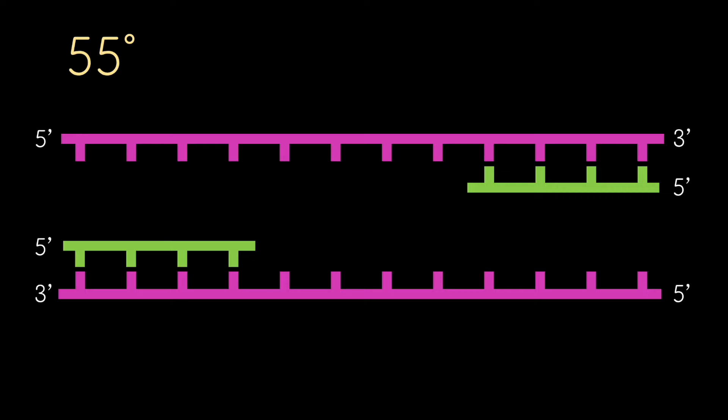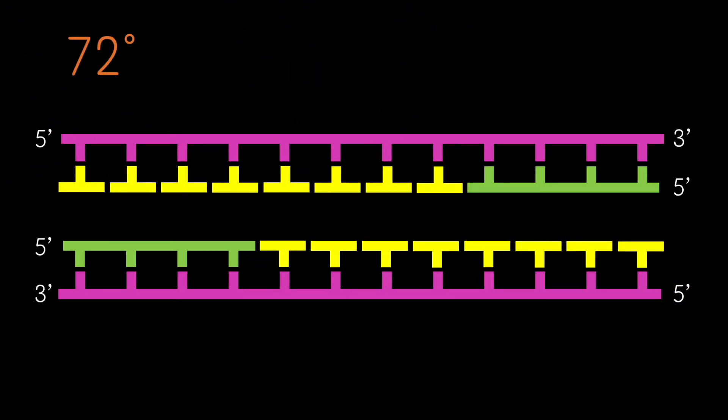The temperature is then raised to 72 degrees Celsius, which allows Taq polymerase to extend the DNA from the primers and new strands are formed.